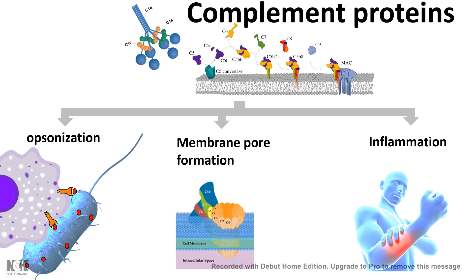Apart from that, some of these complement system proteins are potent anaphylotoxins. Anaphylotoxins are those proteins which have a huge role in inflammation. We would see all of these functions one by one in this video.